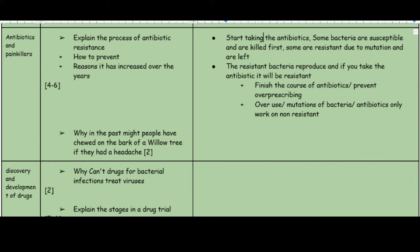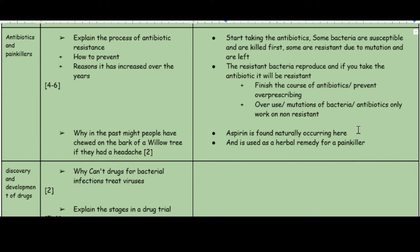Why might people in the past have chewed on the bark of a willow tree for a headache? Different groups, especially Native Americans, used herbal remedies from trees. Modern medicine extracted the active ingredients from these remedies to make them 100% efficient and safe. Aspirin is naturally occurring in willow tree bark and was used as a painkiller — but eating the whole bark was unhealthy. Modern medicine simply extracts the chemicals needed, which is why synthetic drugs are used instead of herbal remedies.